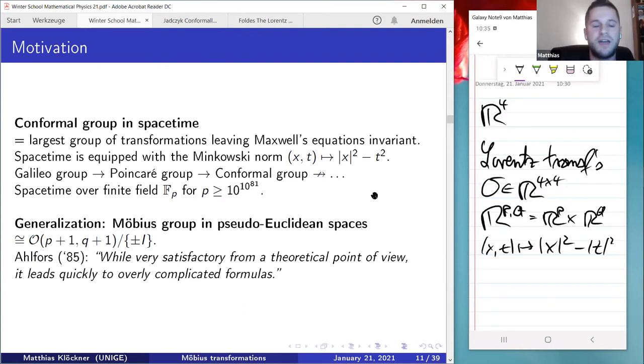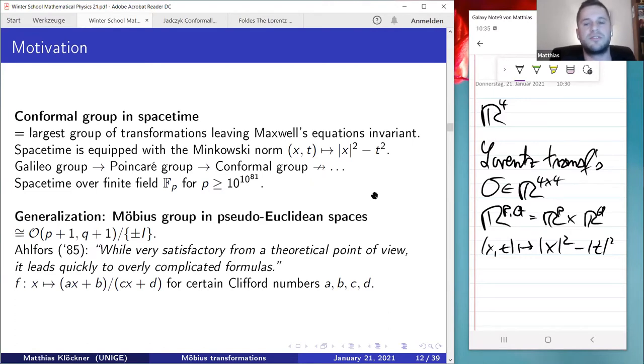He later even corrected himself. But in this paper, he then advocates to express Möbius transformations as certain linear fractional transformations with Clifford numbers as coefficients. In a later paper, he tries to compute all fixed points of a given Möbius transformation represented this way, but he does not succeed at covering all cases, even though he only considers Euclidean Möbius transformations. We're considering pseudo-Euclidean Möbius transformations. If we use the linear algebra representation, which is not overly complicated, then we can solve this problem.